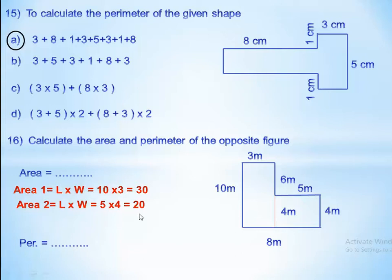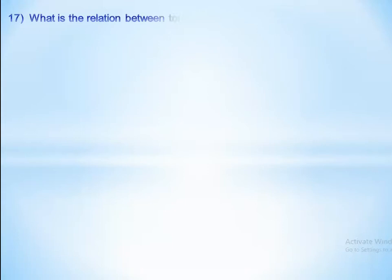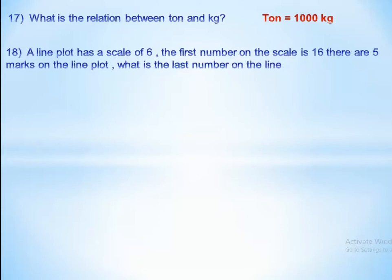Area of rectangle 2 equals 5 times 4 equals 20. Total area equals 30 plus 20 equals 50 square meters. For the perimeter — the sum of all sides — we add: 10 plus 3 plus 6 plus 5 plus 4 plus 8 equals 36 meters. Also, 1 ton equals 1,000 kilograms.